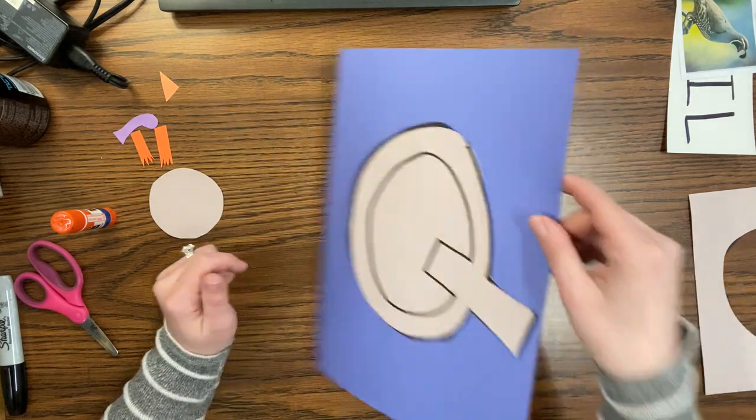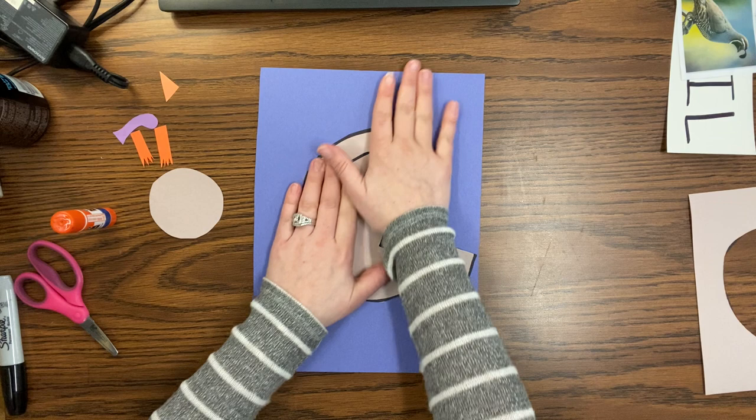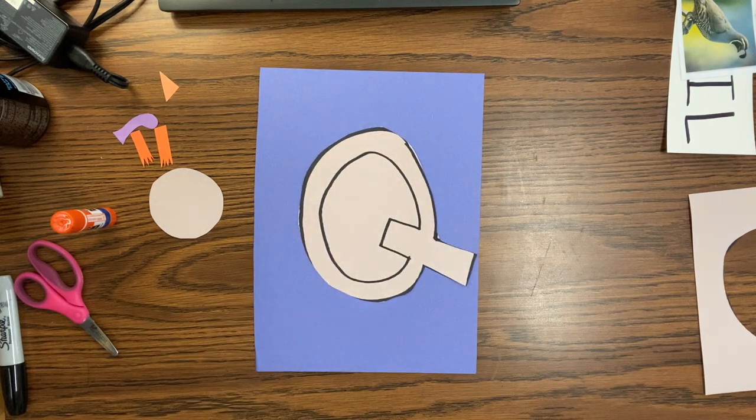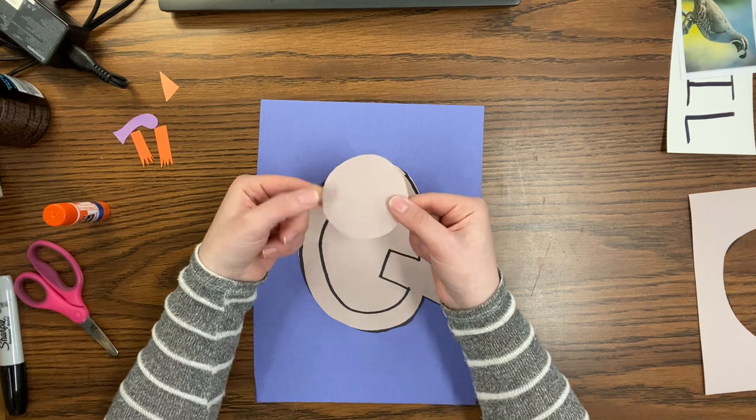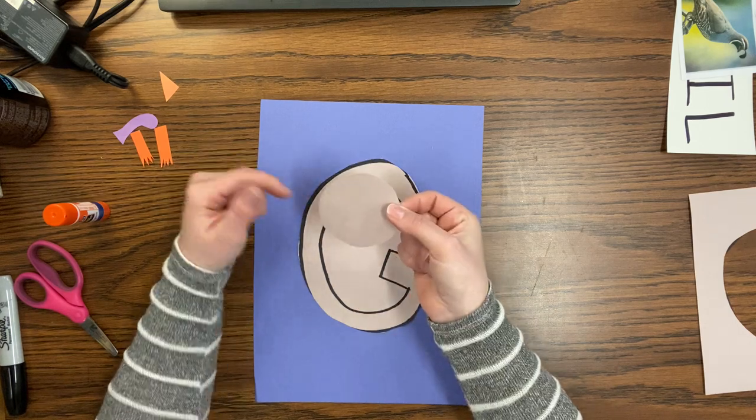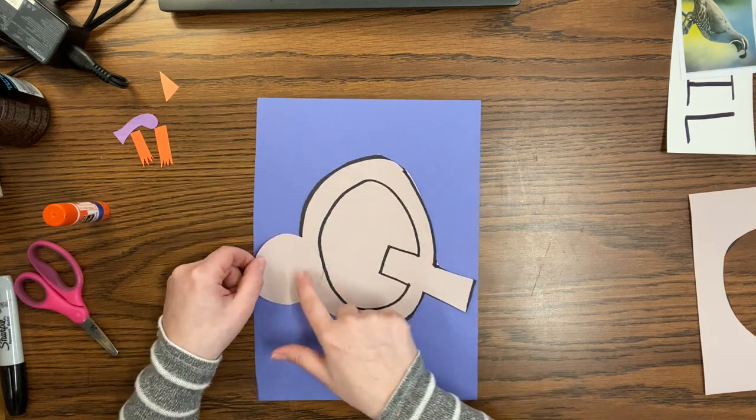And I'm going to press really hard. Look at, it's not coming off. It's glued on nice and tight. Once my Q is glued on, I'm going to find my circle. Can you find your brown circle? The one that matches your Q color?